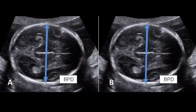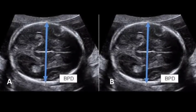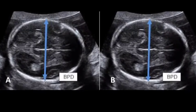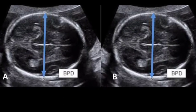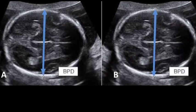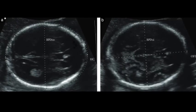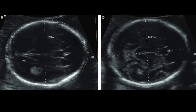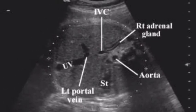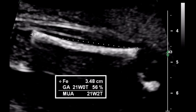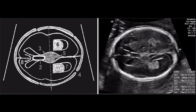Biparietal diameter is one of many measurements taken during ultrasound procedures in pregnancy. It is one of the basic biometric parameters used to assess fetal size. Biparietal diameter, together with head circumference, abdominal circumference, and femur length, are computed to produce an estimate of fetal weight. In the second trimester, this may be extrapolated to an estimate of gestational age and an estimated due date.